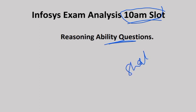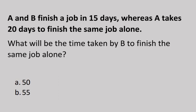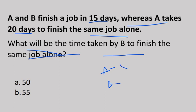Let's start the reasoning ability questions. You can match your answers. We'll complete the video with short tricks. This is a time and work question—we have made a particular playlist on time and work and covered these types of questions hundreds of times. A and B can do a job in 15 days, whereas A takes 20 days to finish the same job alone. What will be the time taken by B to finish the same job?